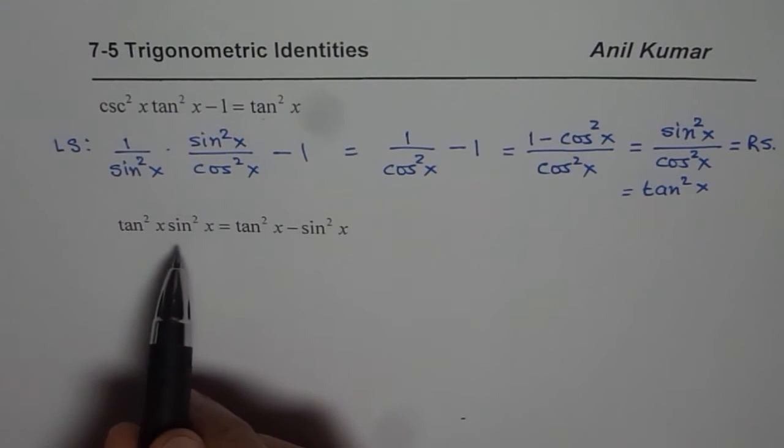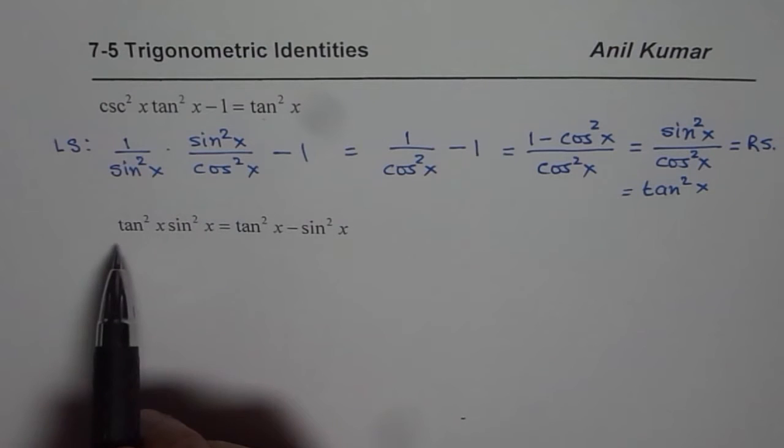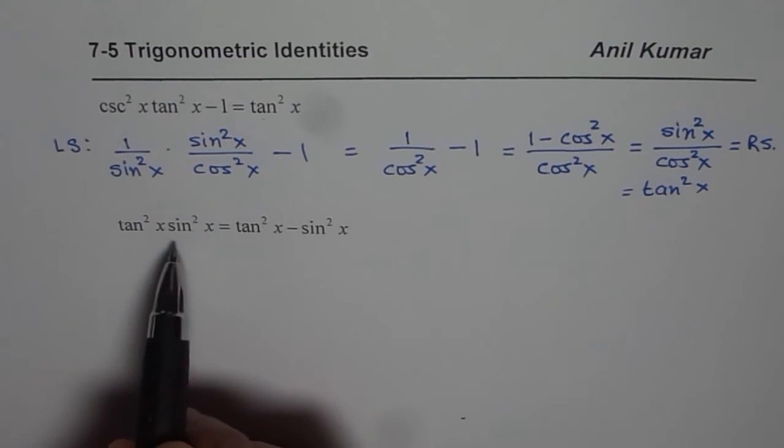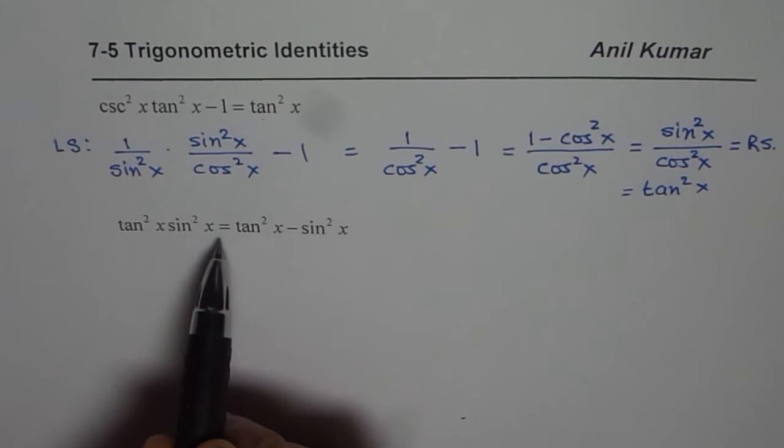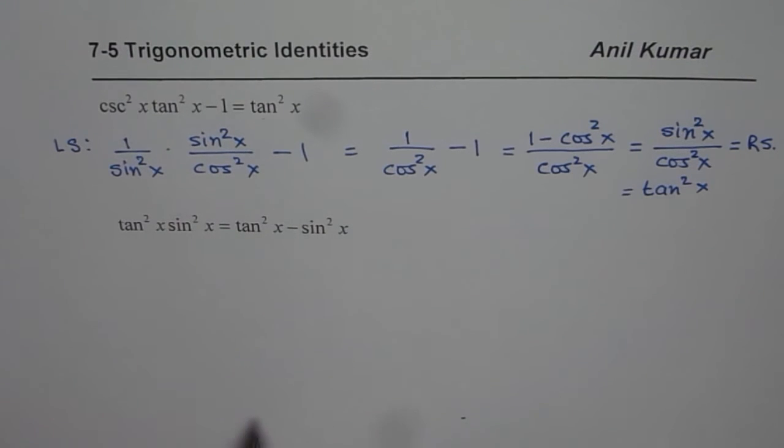Now here the trigonometric identity given to us is tan square x sin square x equals to tan square x minus sin square x. So we have to write from product form to sum or difference form. That means kind of factoring is required.